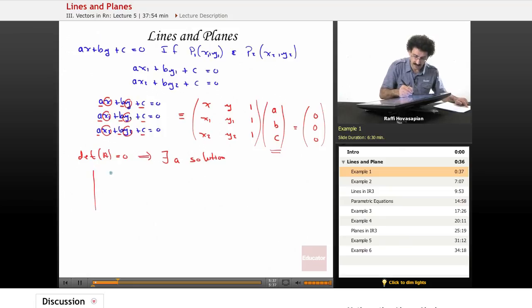Well, so the symbol for determinant is that straight line. X, Y, 1, X1, Y1, 1, X2, Y2, 1.